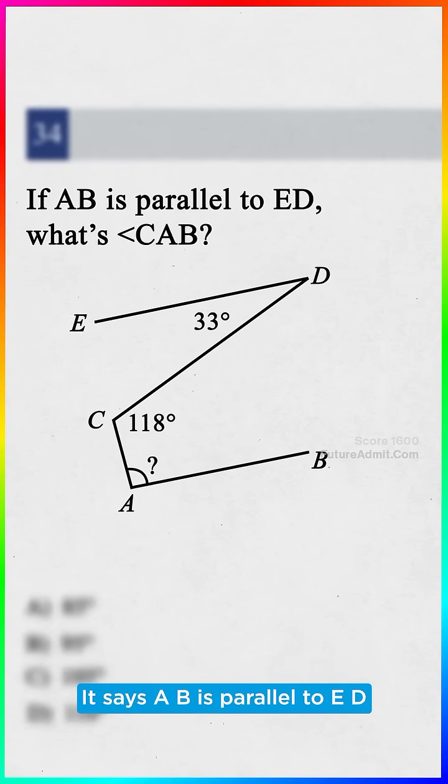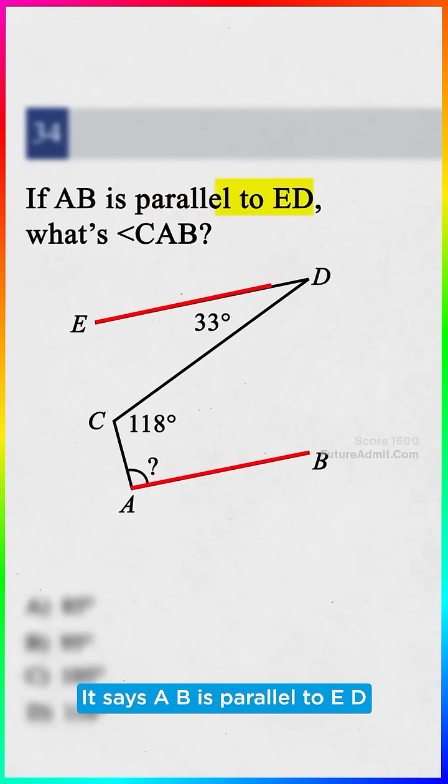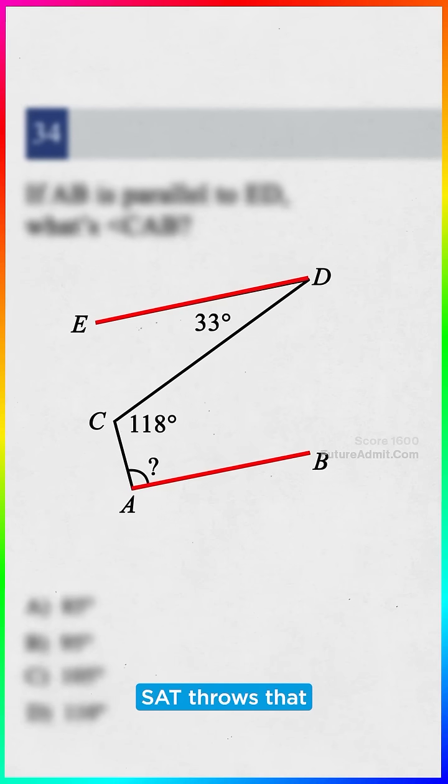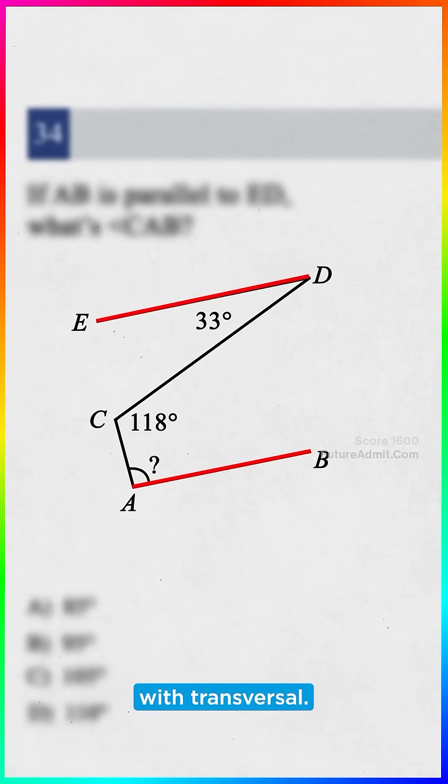Okay, look at the question again. It says AB is parallel to ED. Parallel lines. Whenever the SAT throws that in, we're usually dealing with transversals.